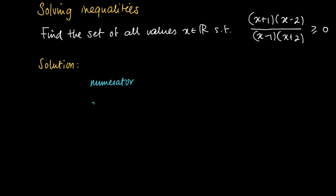Let's have a look at the numerator and the denominator. First we look at the numerator, which is the term (x+1)(x-2). The green line represents the set of all reals. We see that the numerator vanishes at -1 and 2 — these are the zeros of the quadratic term. When we take large x values, so if we are on the right-hand side of 2, then x+1 is positive and x-2 is positive, so the product is positive. We write a plus on the right-hand side of 2.